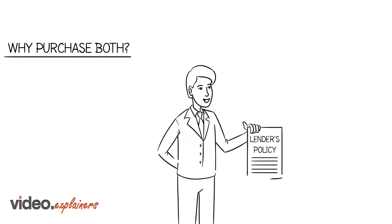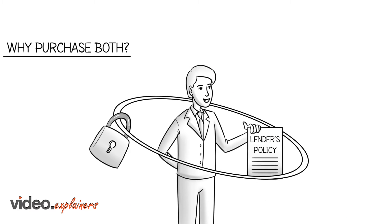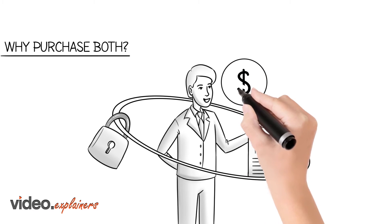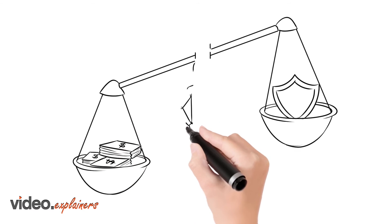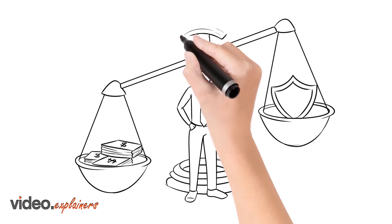While a lender's policy might protect the owner in some circumstances, it is designed to protect the lender's interests. That protection typically decreases as you pay down your loan.